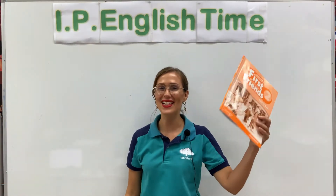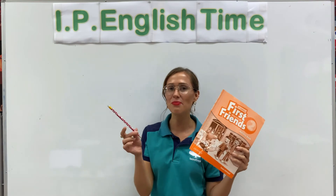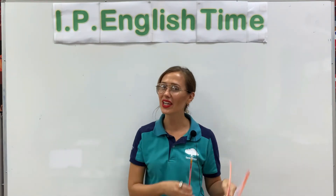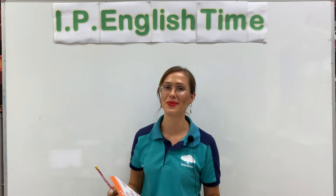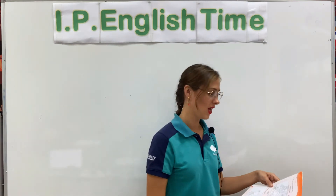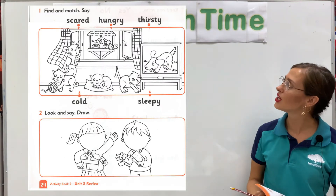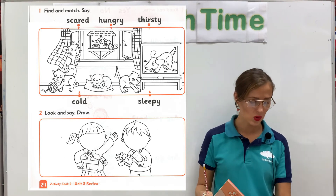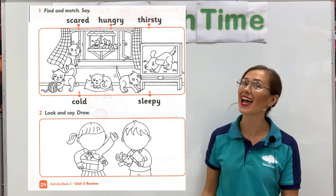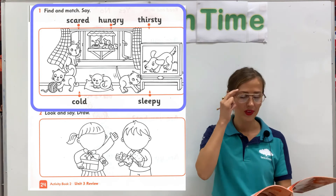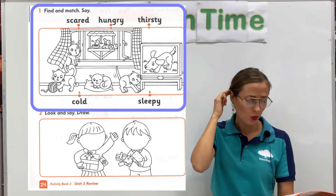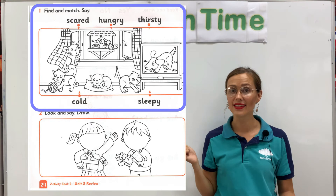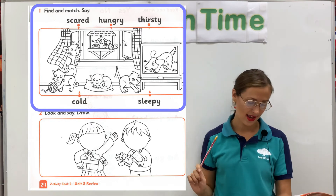K3, let's get your workbook ready! And a pencil please! You can open your workbook on page number 24. So, if you have page number 24 ready, you will see a picture with some cats. We have to match the feeling to the correct animal.